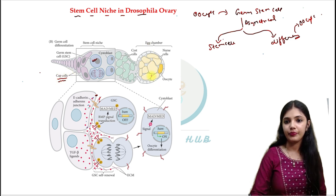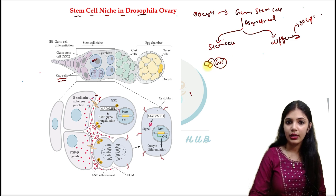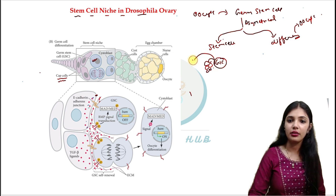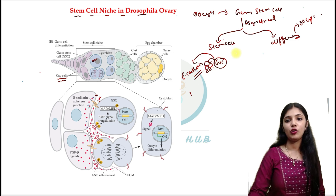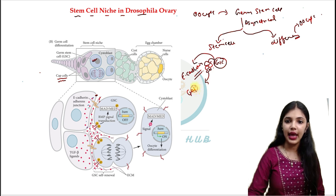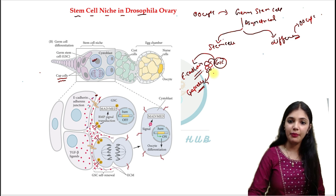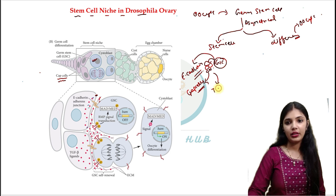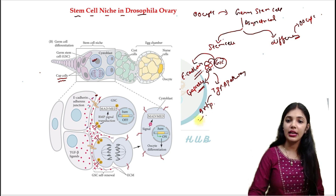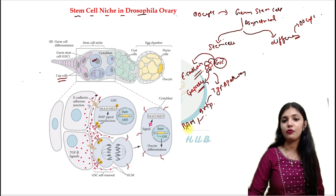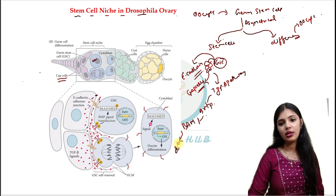The GSC (germ stem cell), if it wants to remain in stem cell form, will be attached to the cap cells. For this attachment, cell adhesion molecules — cadherin — are required, which help the stem cells adhere to the cap cells. Due to the cap cells, the TGF-beta pathway is activated, and due to TGF-beta pathway activation, there is secretion of BMP factor. The BMP factor inhibits BAM, and BAM's function was to help the cell go into the differentiation form.